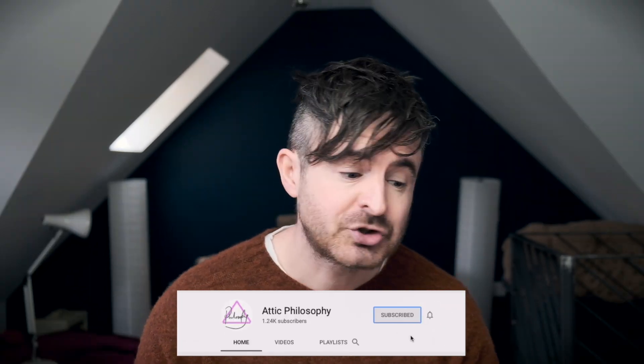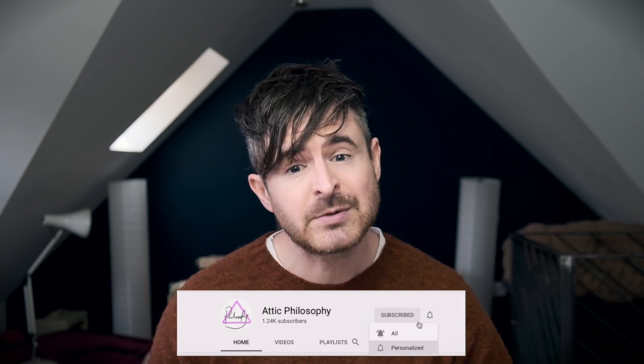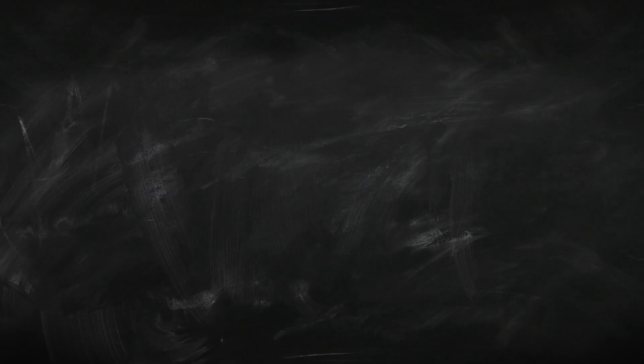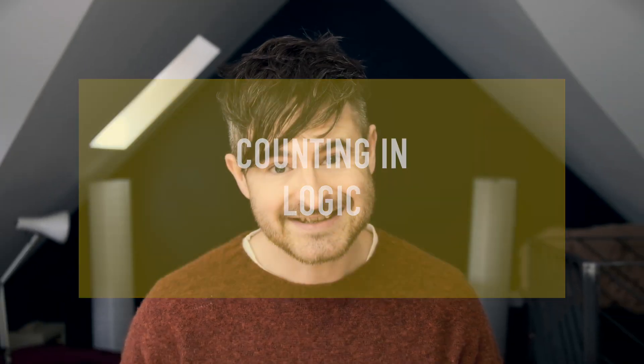If you're finding this series of videos on logic useful, why not subscribe to the channel and get the updates? One really important application of identity in logic is that it allows us to count things — to express sentences like there's at least two happy people in the class, or there's no more than three rich people watching this video right now, or exactly two students got 100% in the test. We can't express things like that in first order logic without using identity. So let's see how we do it.